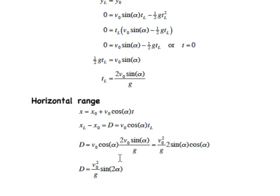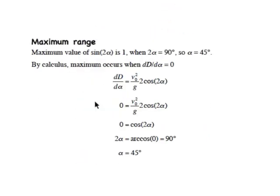That's most convenient for us if we want to find out what the maximum horizontal range is. This is going to happen when the sine of 2 alpha is 1, and that occurs when 2 alpha is 90 degrees. So that means that alpha is 45 degrees maximally.